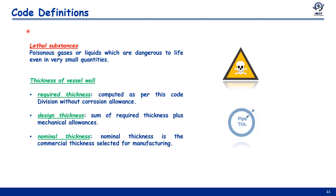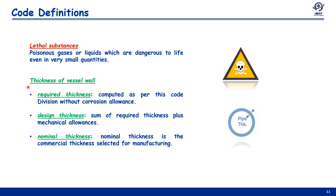We also have the definition of lethal substance. A lethal substance is any poisonous liquid or gas that is dangerous to life even in very small quantities. Even very minor exposure can be hazardous or fatal. These are called lethal substances, and the code has specific and very restrictive requirements for vessels handling them.